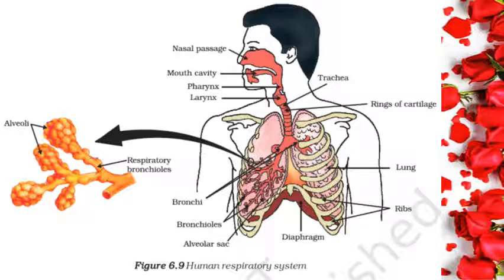Blood vessels transport oxygen to all the cells in the body. When air is taken in and let out, the lungs always contain a residual volume of air so that there is sufficient time for oxygen to be absorbed and for carbon dioxide to be released. When the body size of an animal is large, diffusion pressure alone cannot take care of oxygen delivery to all parts. Respiratory pigments take up oxygen from the air in the lungs and carry it to tissues. In human beings, the respiratory pigment is hemoglobin, which has a very high affinity for oxygen. This pigment is present in the red blood corpuscles. Carbon dioxide is more soluble in water than oxygen and is mostly transported in the dissolved form.